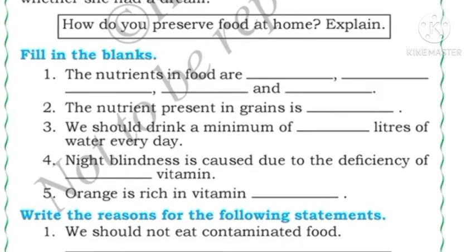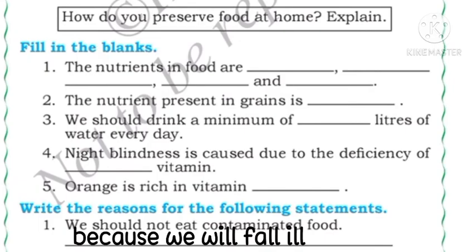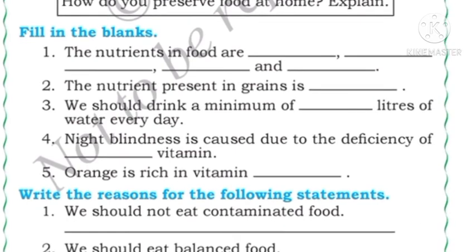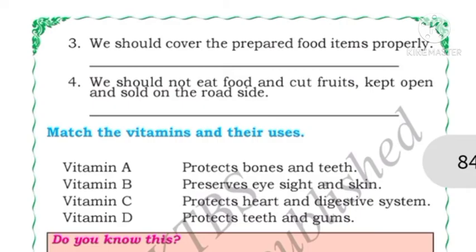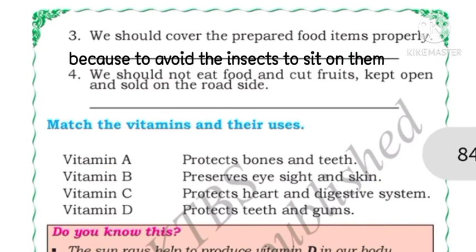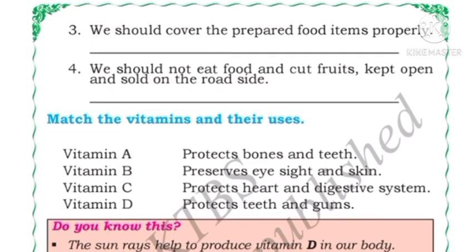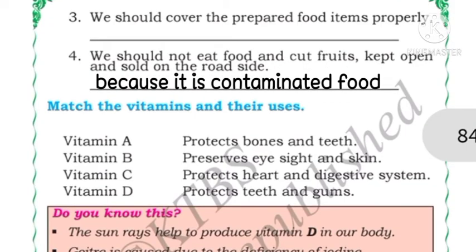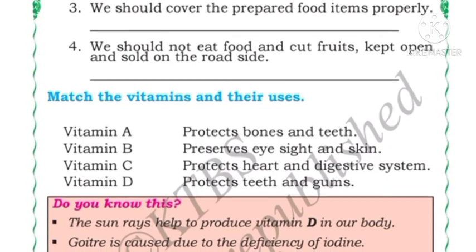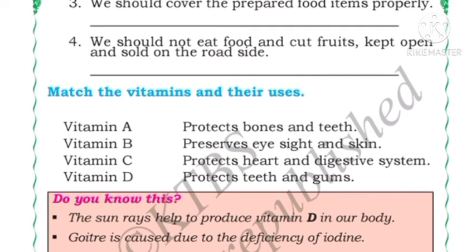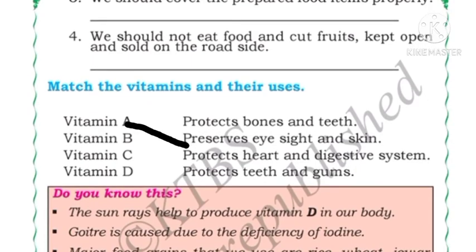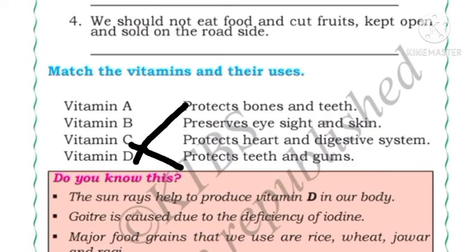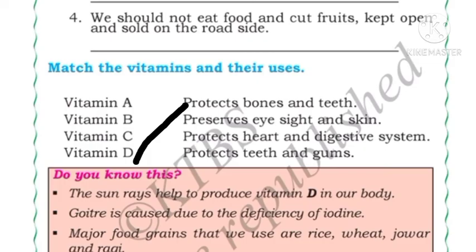Write the reasons for the following statements: We should not eat contaminated food because we will fall ill. We should eat a balanced diet because it provides the required amount of nutrients to our body. We should cover prepared food items properly to avoid insects sitting on them. We should not eat food and cut fruits kept open on the roadside because it is contaminated. Now match the vitamins: Vitamin A — preserves eyesight and skin; Vitamin B — protects the heart and digestive system; Vitamin C — protects teeth and gums; Vitamin D — protects bones and teeth.